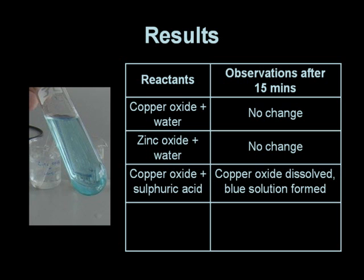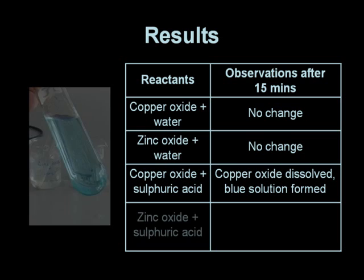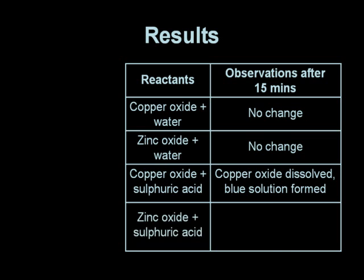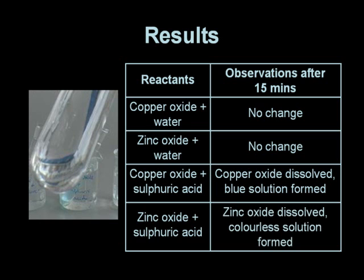In the case of copper oxide and sulphuric acid, we saw that the copper oxide dissolved and a blue solution was formed, which is strong evidence that a reaction has occurred. Finally, in the case of zinc oxide and sulphuric acid, we can see that the zinc oxide has dissolved and a colourless solution has been formed, and a reaction has taken place.